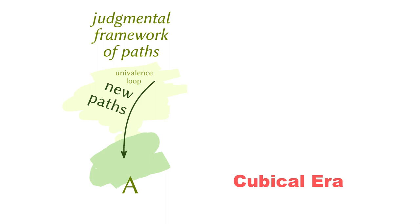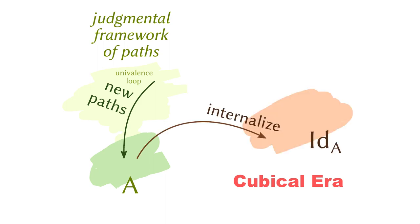There are some technical difficulties, which we will discuss later on. But the first idea is to put the intervals in the context so we can talk about the path directly. And later on, if we want to, we can internalize these paths as identifications in the identification types. But that's an afterthought — it's not necessary to have identification types anymore to discuss these paths.